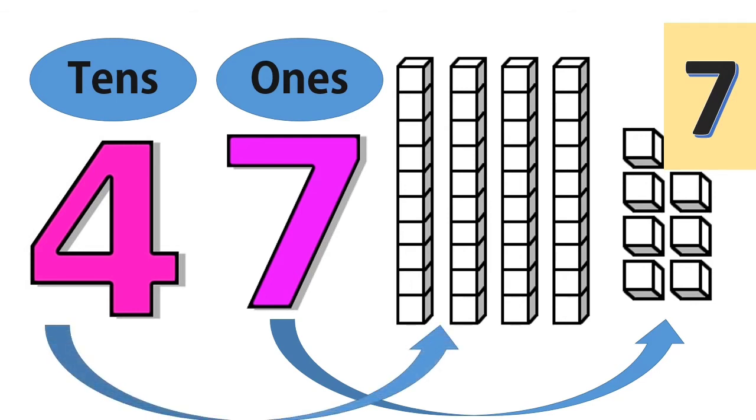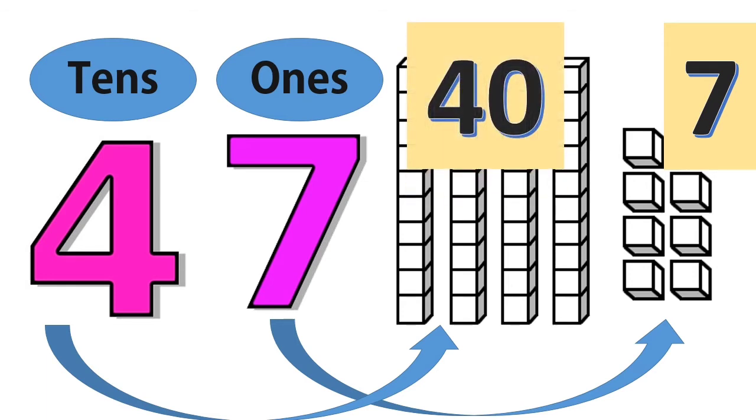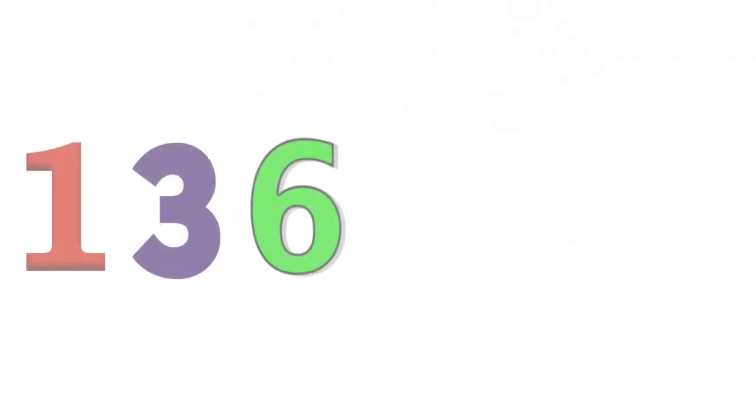The number four is at the tens place, so it's ten times four. Ten times four is forty. So, seven worth seven, and four worth forty.